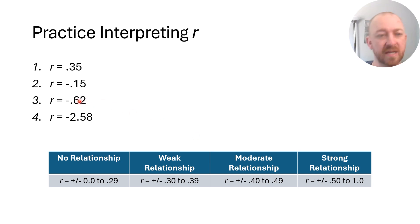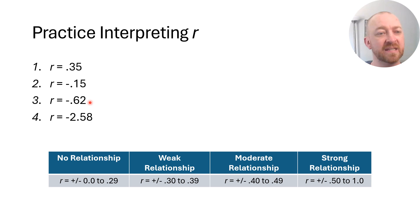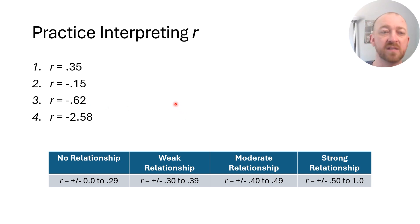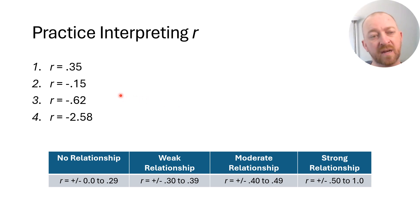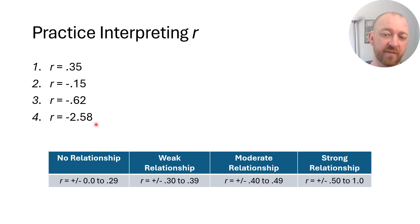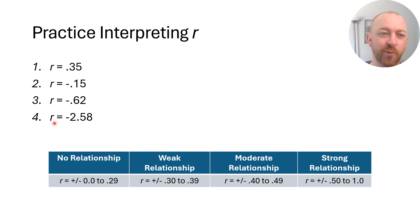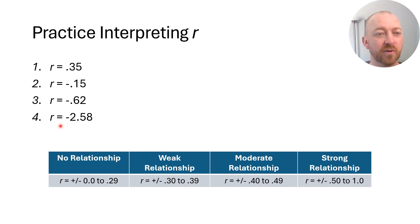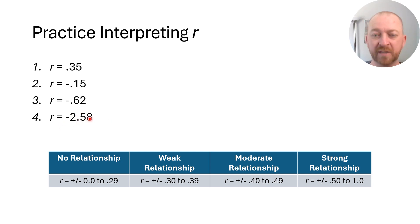R = negative 0.62: a negative relationship that falls between negative 0.5 and negative 1.0 — that's a strong negative relationship. As one variable rises the other tends to fall with pretty good reliability. R = negative 2.58: that's a trick question. This value cannot exist in a Pearson correlation or any other valid correlation. If you get this, you've done something wrong — go back and check your math.